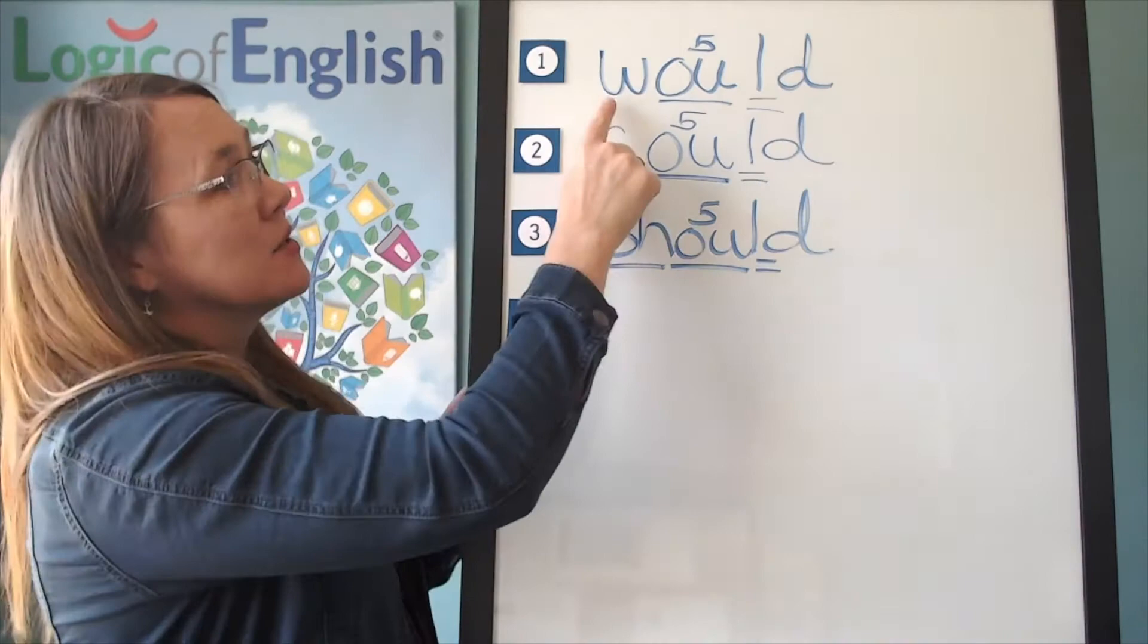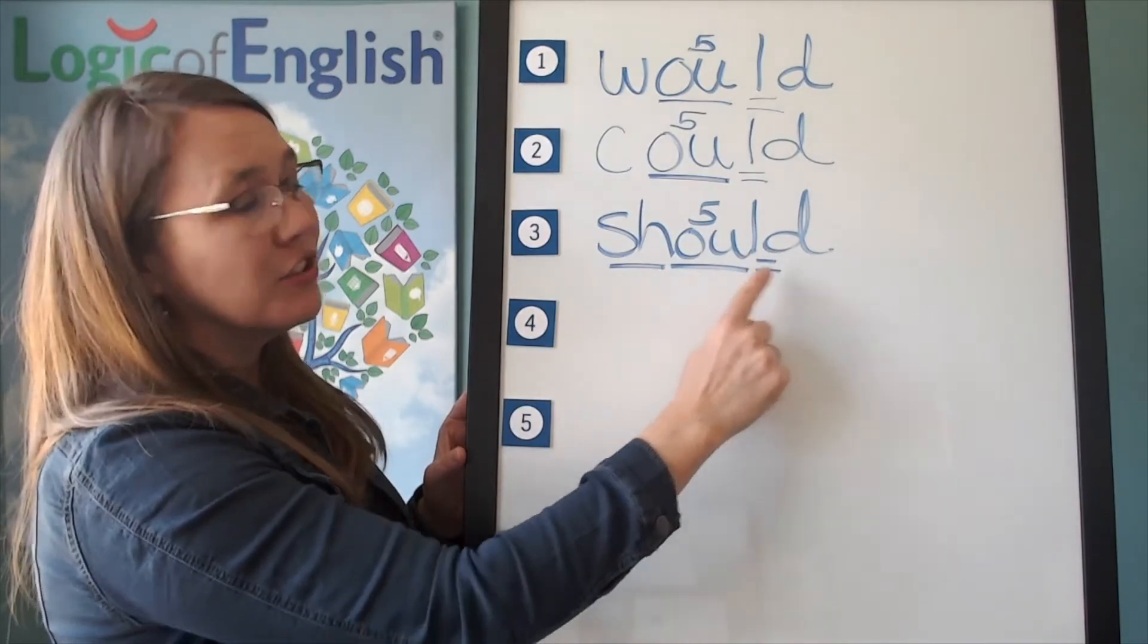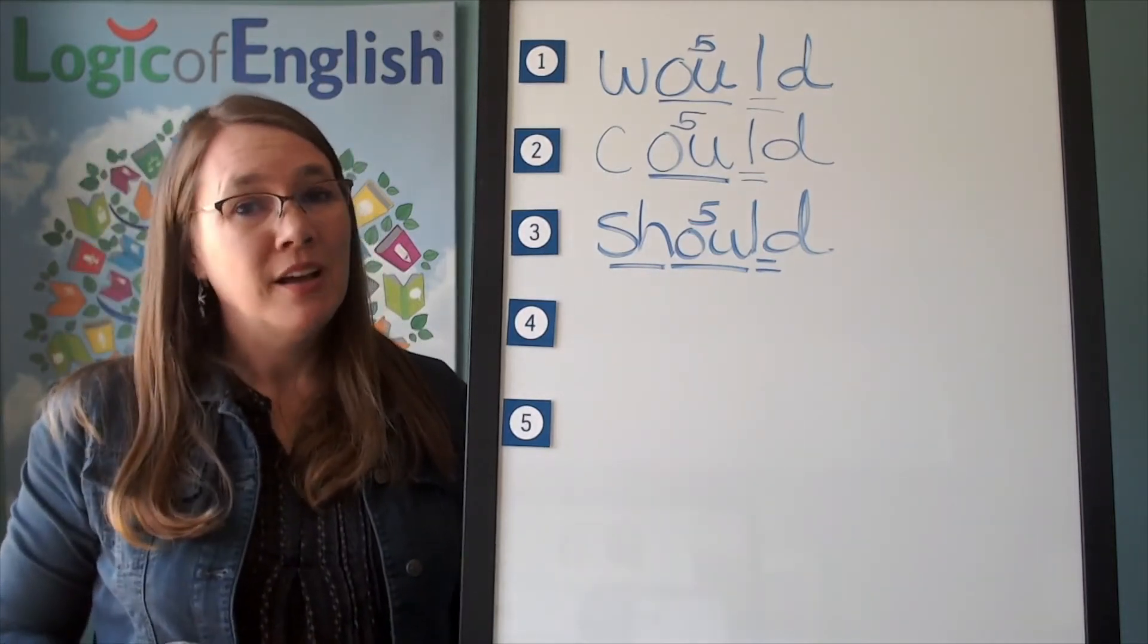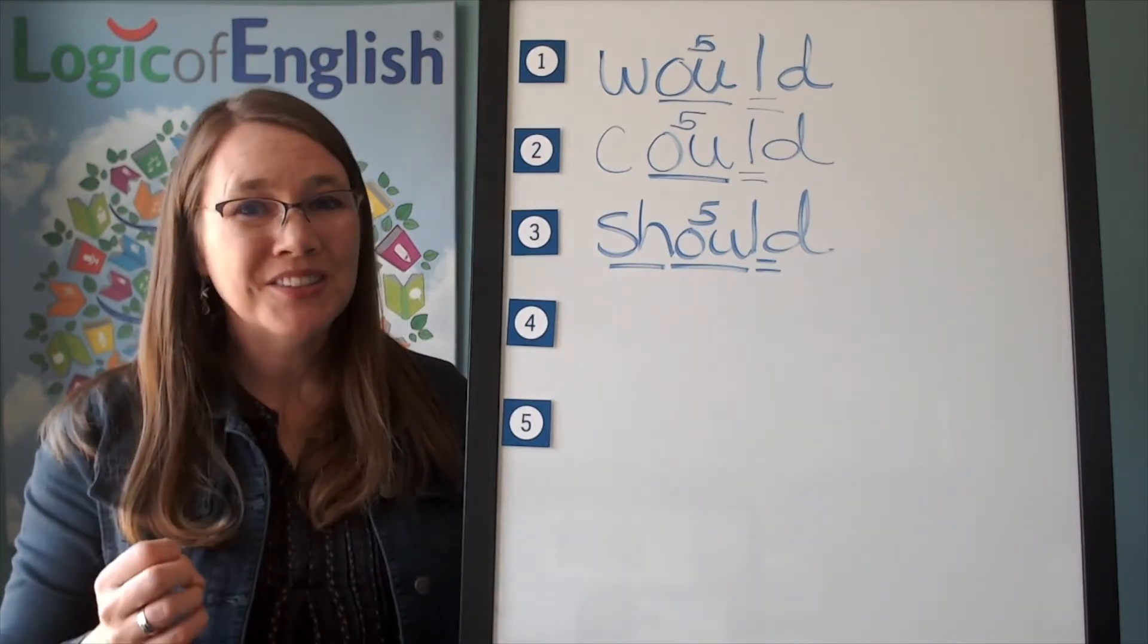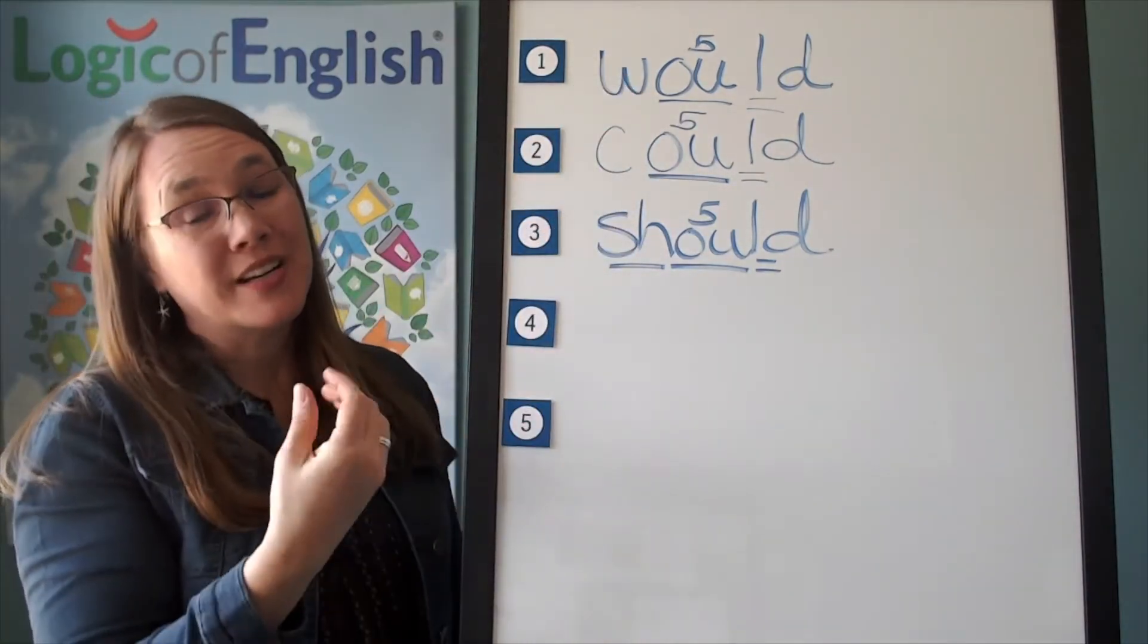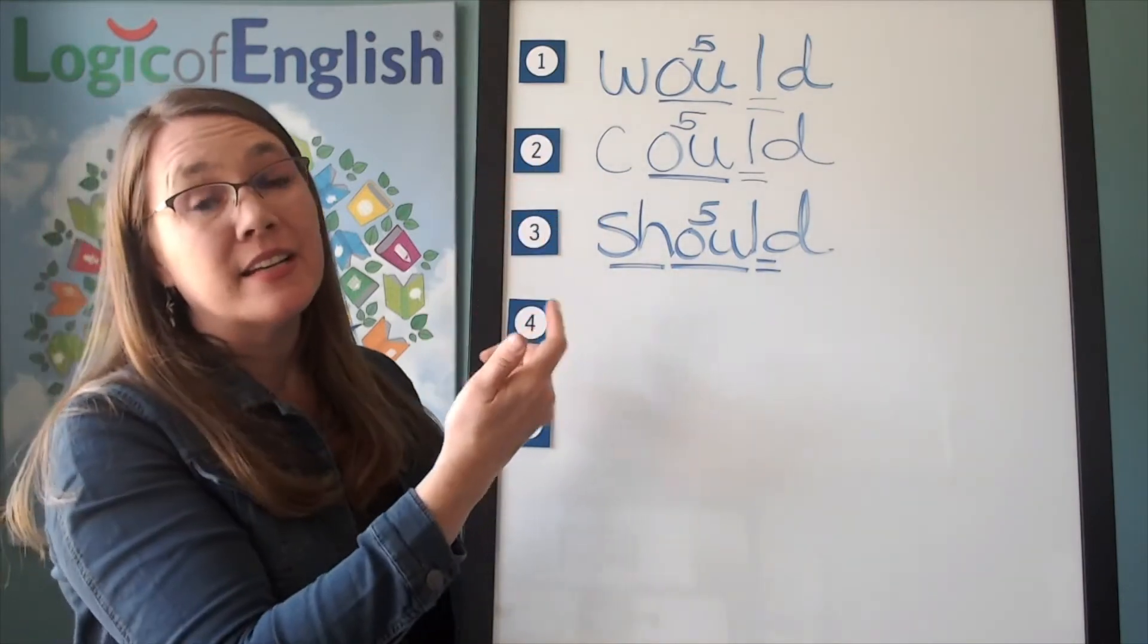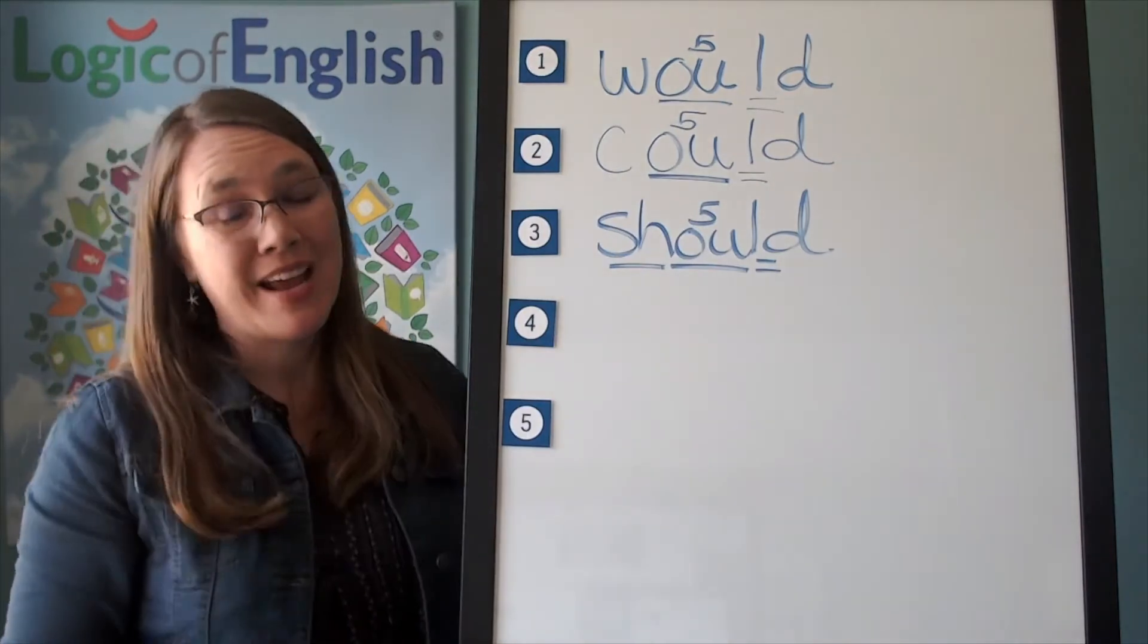Let's read each of these. W. Uh. Duh. Would. K. Uh. Duh. Could. Sh. Uh. Duh. Should. Now, there's something else that's kind of interesting about these words. Let me give you an example. Each of these sentences are right. Would you? Could you? Should you? These all begin questions or can begin questions or I would, I could, I should. So, they're somewhat related in meaning and how we use them and so you'll notice there's a relationship between how they are spelled.